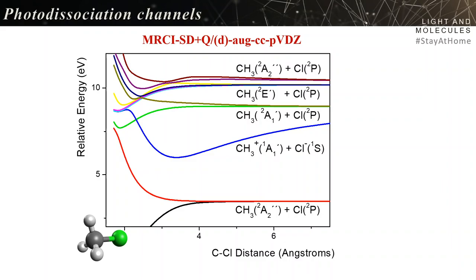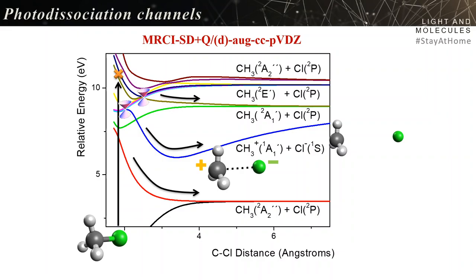We computed MRCI singles and doubles with Davidson correction using a big basis set for potential energy curves for dissociation. After high energy excitation, you have a few hot spots of non-adiabatic crossings allowing population of different asymptotic levels. There's a nice coulomb complex being formed that fragments into charged particles CH3+ plus Cl-.